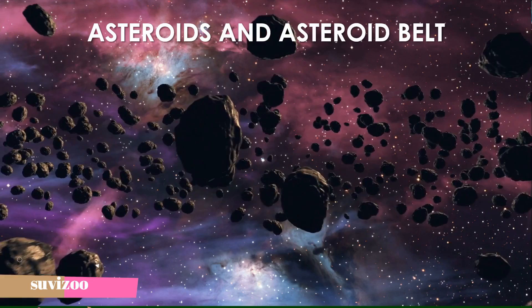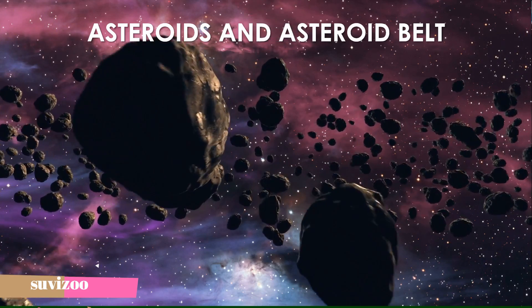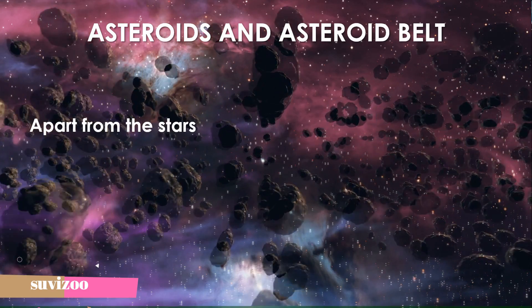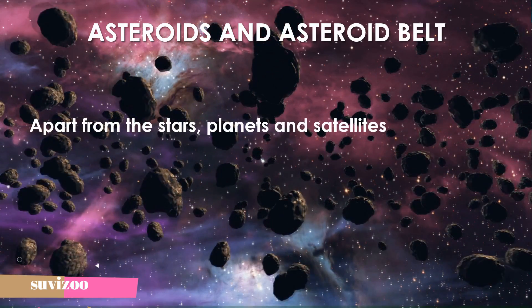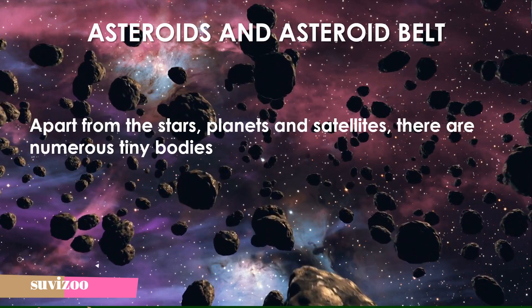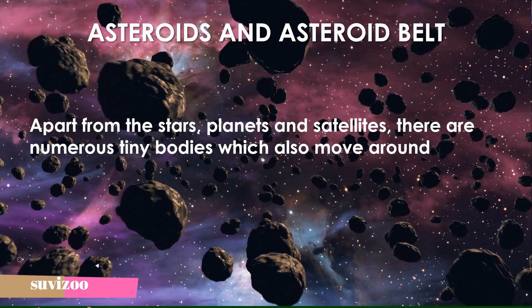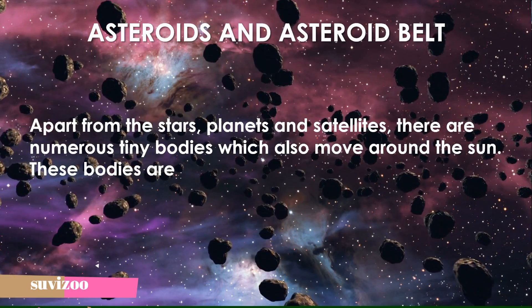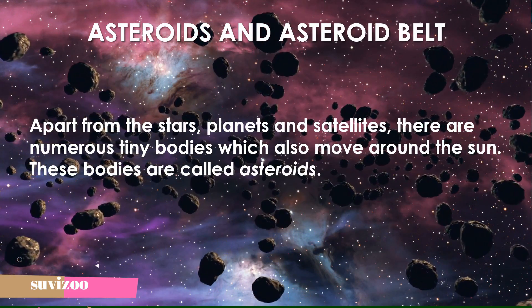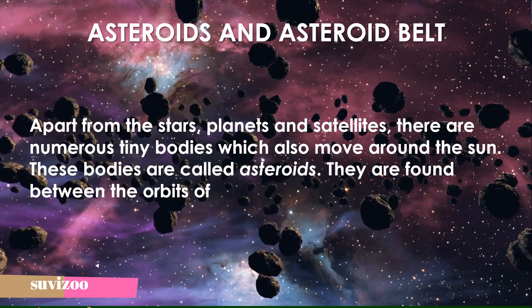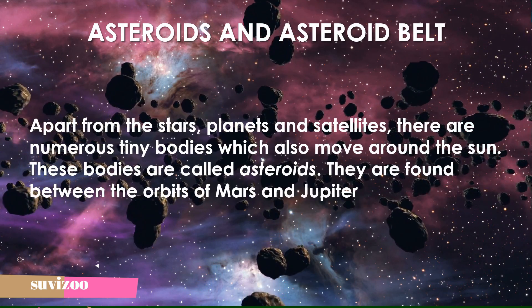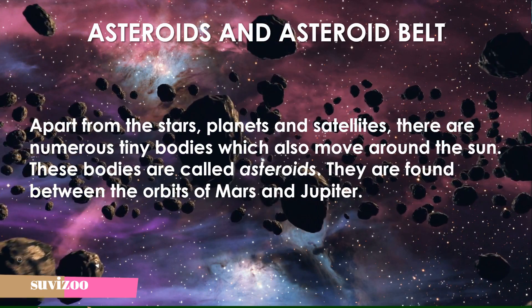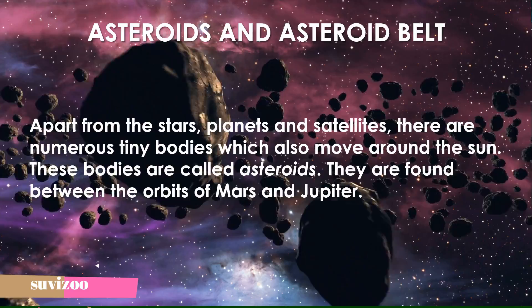Asteroids and the asteroid belt. Apart from the stars, planets, and satellites, there are numerous tiny bodies which also move around the sun. These bodies are called asteroids. They are found between the orbits of Mars and Jupiter.